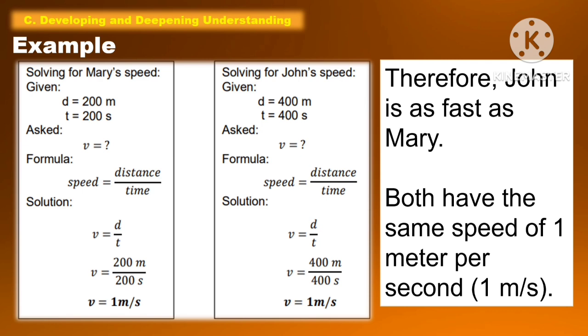John and Mary have the same speed of 1 meter per second. Therefore, John is as fast as Mary.